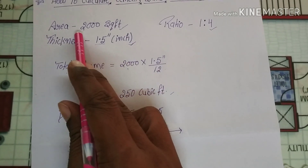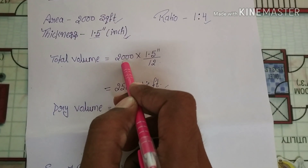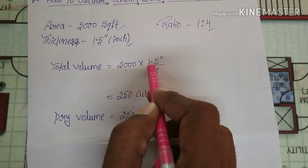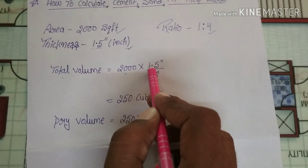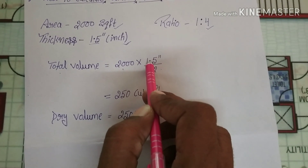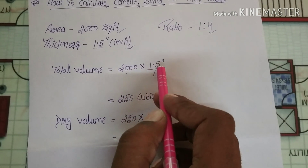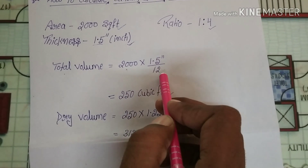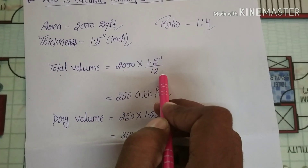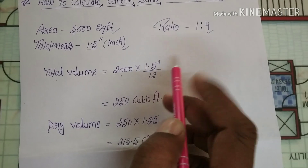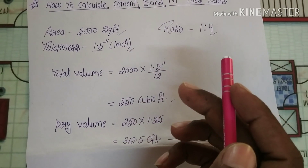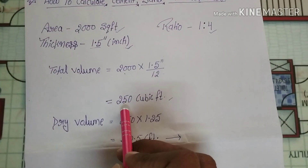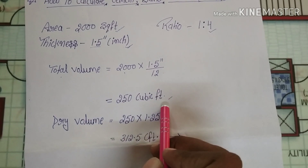Total area is 2000 square feet multiplied by thickness — 1.5 inches divided by 12. So the total volume is 250 cubic feet.